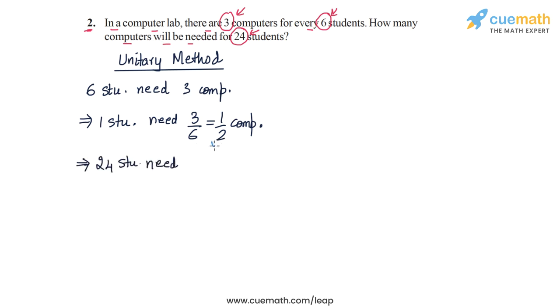So 1 student needs half a computer, so 24 students will need half into 24 computers, or 12 computers. So half into 24 is 24 by 2, which is 12. So we get the answer as 12 computers. So 24 students will need 12 computers.